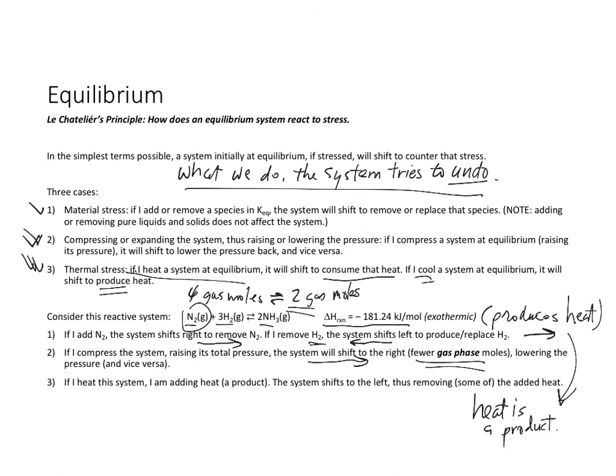Finally, if I heat this system, I'm adding heat. It's a product. That means the system is going to shift to the left to remove some of that added heat. If I cool this system, it's going to shift to the right to produce the heat that I am removing. Again, in all cases, what we do, the system tries to undo. That's Le Chatelier's principle. If I stress a system at equilibrium, it shifts to undo that stress or to counter that stress. What I do, it tries to undo. This concludes our introduction into equilibrium.